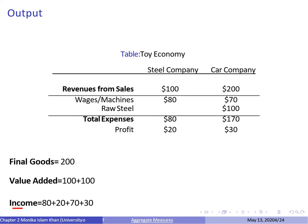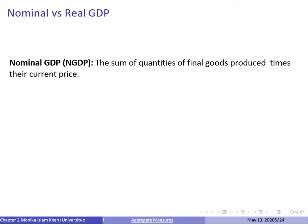Using the income method, we add together the incomes earned by workers as wages, the incomes earned by the owners of machines, and the income earned by the owners of the company as profit. Adding all of that gives us the same GDP we calculated using the final goods method and the value added method. Whatever method you use is going to give you the same value of GDP.